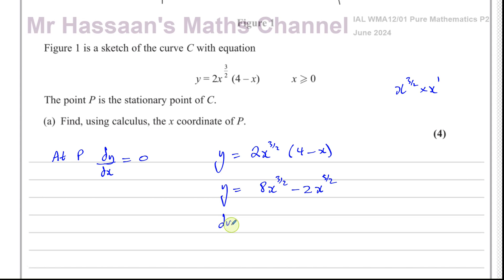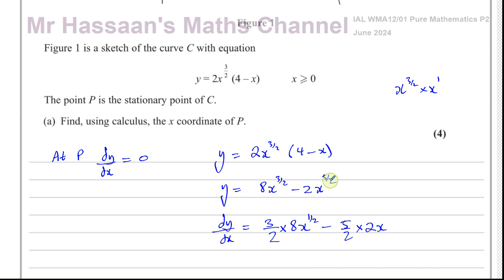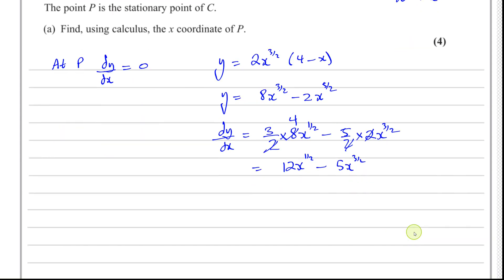Now we differentiate. dy/dx equals: multiply by the power — 3 over 2 times 8x to the power of 3 over 2 minus 1, which is 1 over 2 — minus 5 over 2 times 2x to the power of 5 over 2 minus 1, which is 3 over 2. The 2 cancels with the 8 leaving 4, and the 2 cancels with the 2, so dy/dx equals 12x to the power of a half minus 5x to the power of 3 over 2.